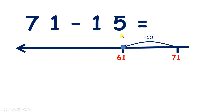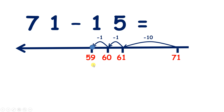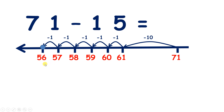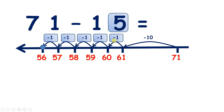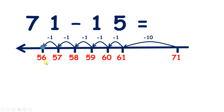Now we need to take away our five units. So if we count back five from 61, we get 60, 59, 58, 57, and 56. So we've subtracted five. So 71 minus 15 equals 56.